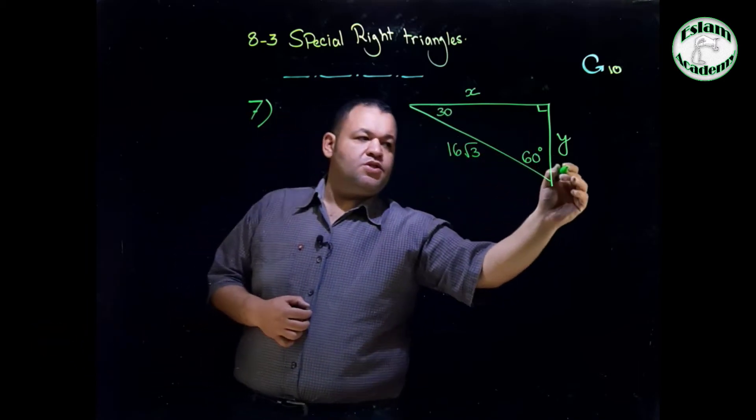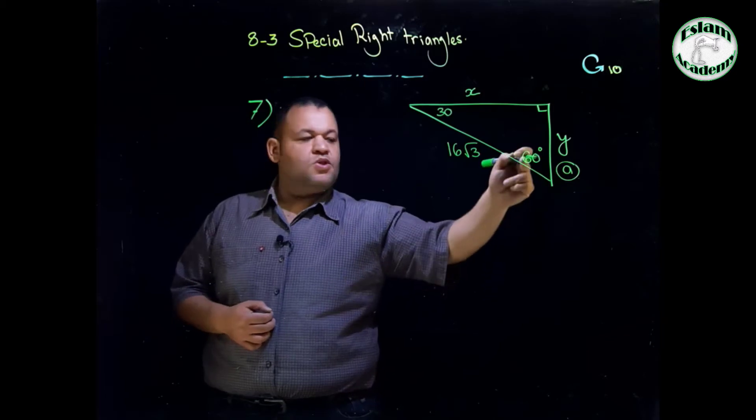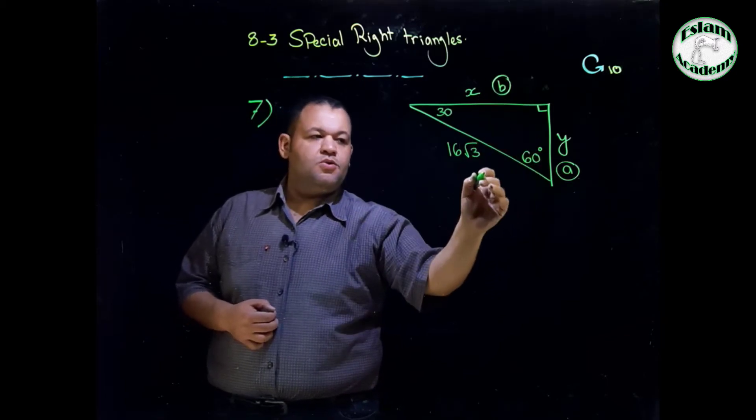The side opposite to the angle 30 is A. The side opposite to the angle 60 is B. The hypotenuse is C.